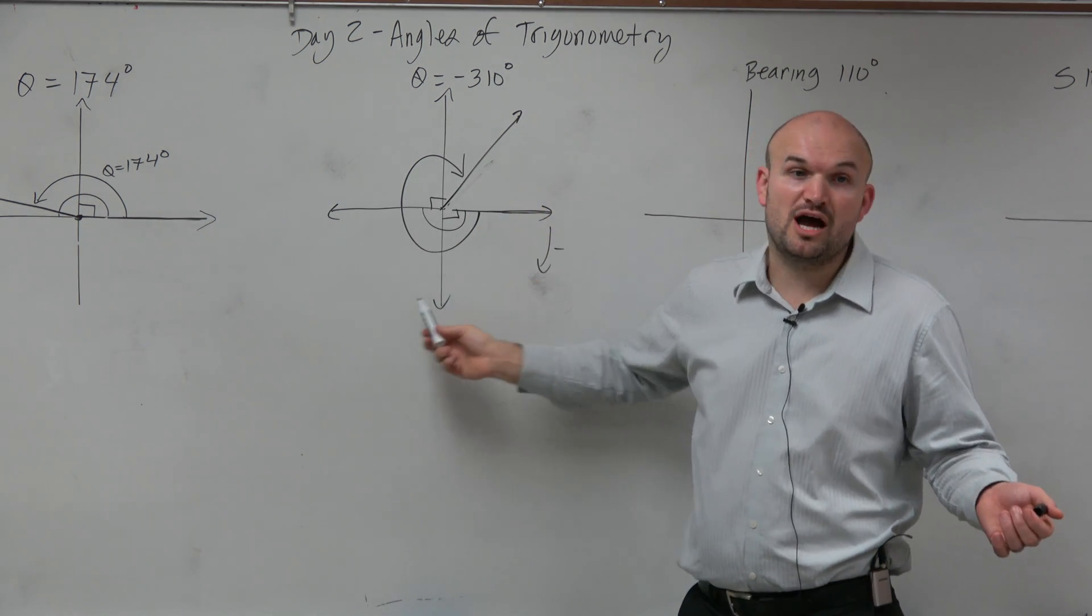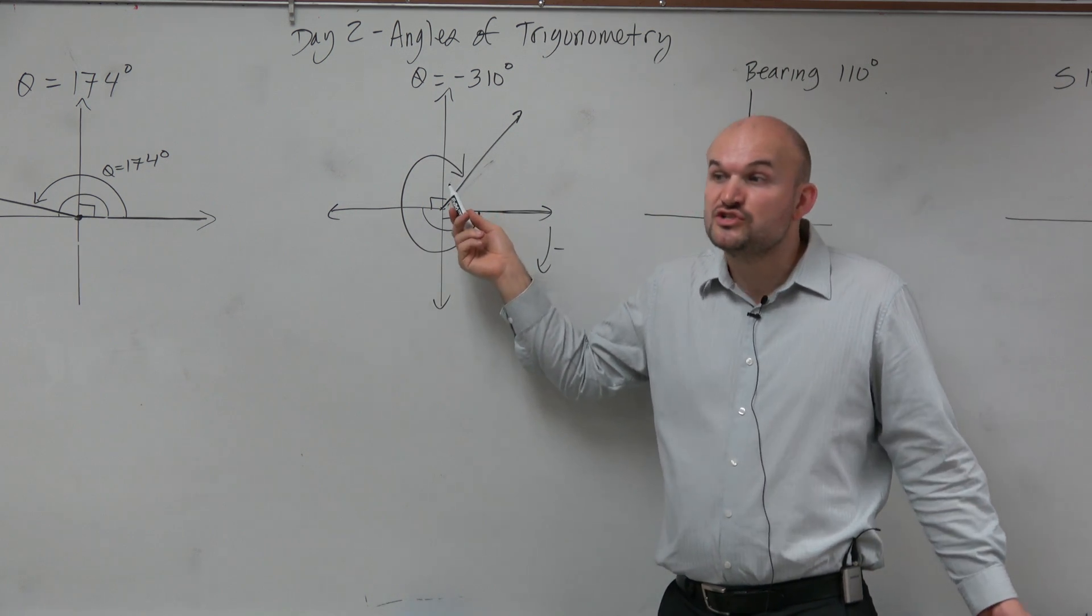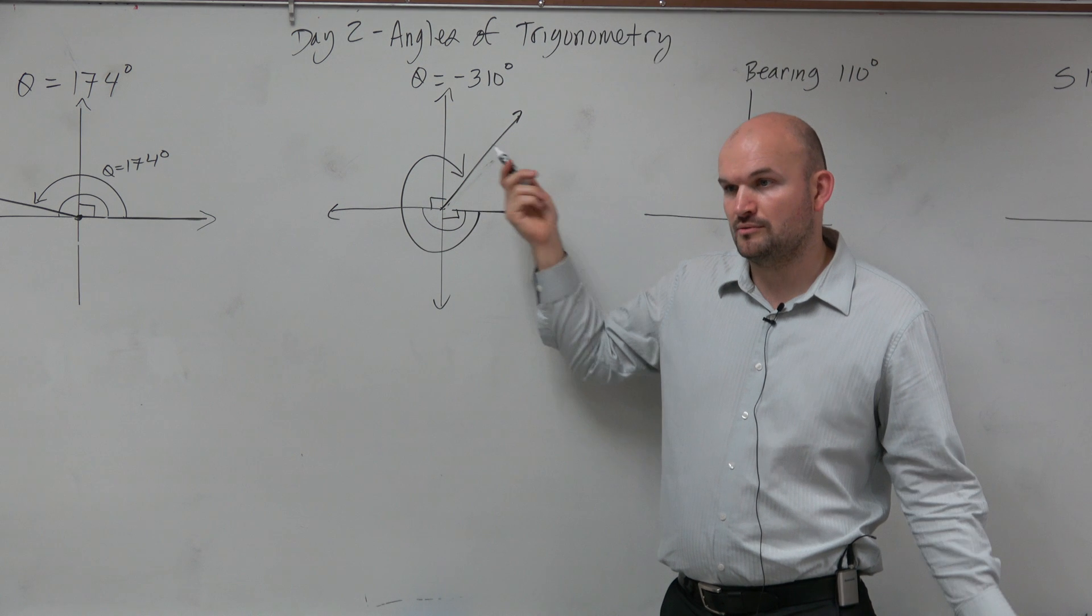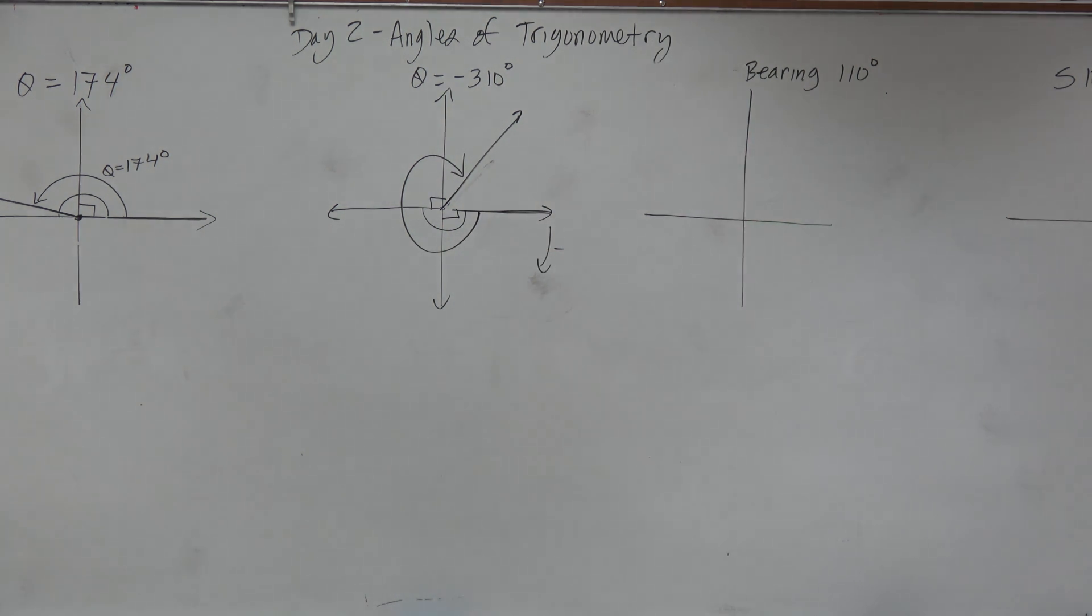Or you could also think about it. We know all the way around the circle is 360. And we're about 50 degrees short of 360. So about 50 degrees short will be right there. And again, we're just sketching to get a general idea of where we should be.